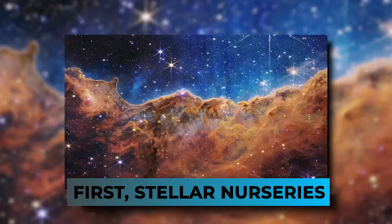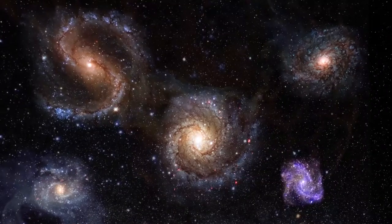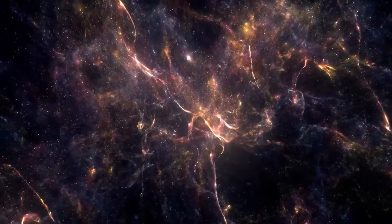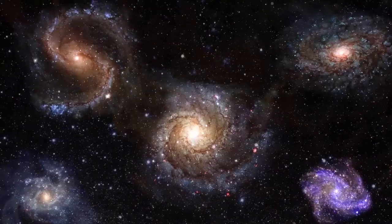First, stellar nurseries. Nebulae are the places where stars are made. There are two kinds of nebulae, reflection and emission.